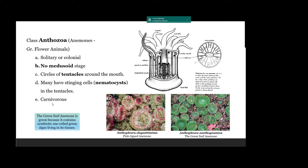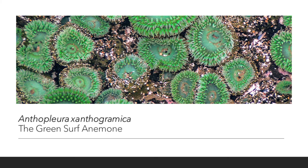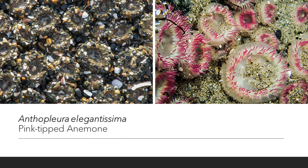These animals are carnivorous. Especially this green anemone, which you'll see down on the rocky intertidal beach — these are the two you will see the most. There are some others in Netarts Bay that don't inhabit the rocky intertidal, but the two species here are the giant green surf anemone and the pink-tipped anemone: Anthopleura xanthogrammica and Anthopleura elegantissima.